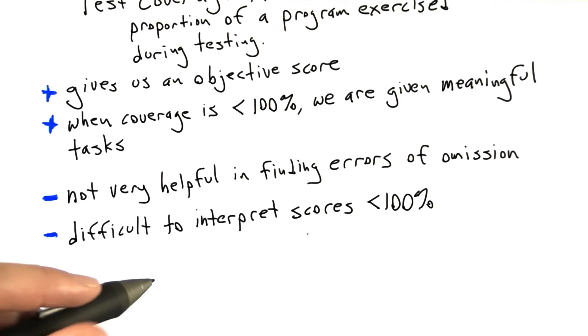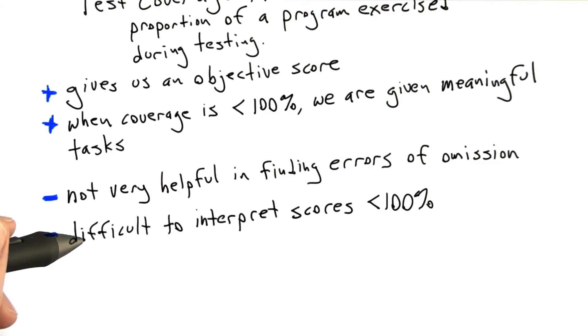For larger, more complex software systems, where the standards for correctness are not as high as they are for safety-critical systems, it's often the case that it's difficult or impossible to achieve 100% test coverage, leaving us with this problem of trying to figure out what that actually means about the software.